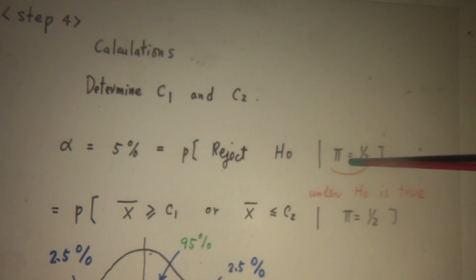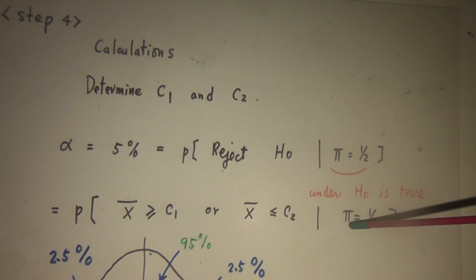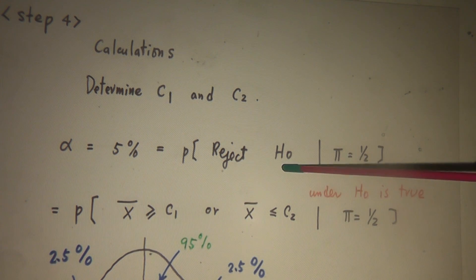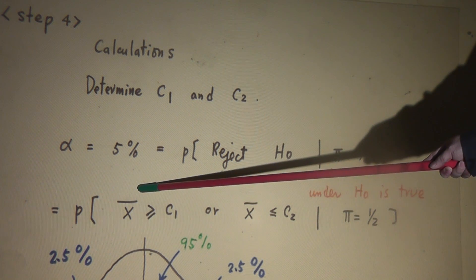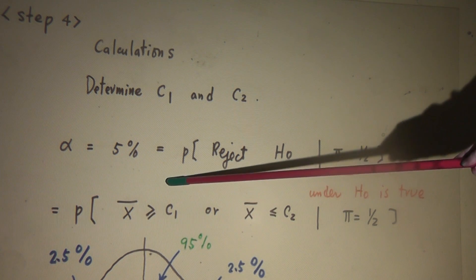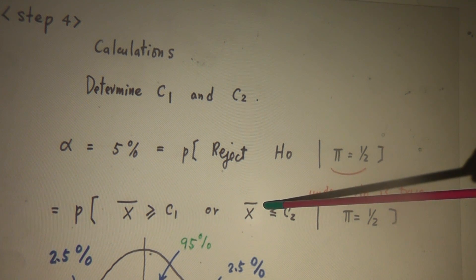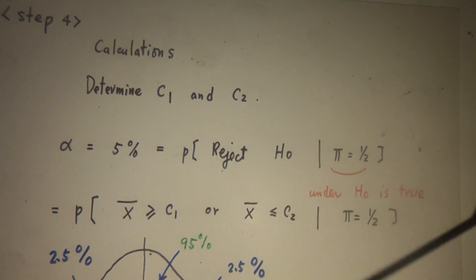Under H0 is true, pi equals 50%. So, X bar — under H0 is true, pi equals 50%. And why do we reject H0? Because the collected evidence is consistent with HA, not consistent with H0. In this case, if you find too many heads or too few heads, this kind of evidence supports HA, not H0. So we reject H0.